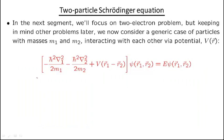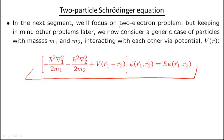We're interested in analyzing the two-particle Schrödinger equation. To keep things general for later in the course, I'm considering two different particles with masses M1 and M2. In the next segment we'll work with the two-electron problem where M1 equals M2. The Hamiltonian has kinetic energy P1² / 2M1 for the first particle, plus P2² / 2M2 for the second, plus an interaction potential that depends only on the distance between the particles. The wave function depends on both coordinates R1 and R2, and the right-hand side is the usual energy times Psi.